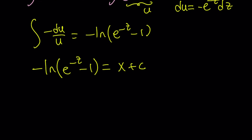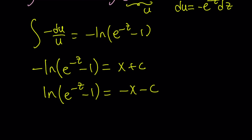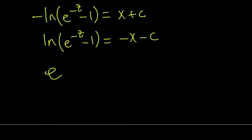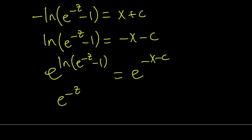Now let's go ahead and multiply both sides by negative 1, and that gives us negative x minus c. To get rid of the ln, we can do e to the power of both sides. That's going to give us: e to the power of ln of (e to the power negative z minus 1) equals e to the power of negative x minus c. Since e to the power ln of something is just that something, it becomes e to the power negative z minus 1 equals e to the power negative x minus c.